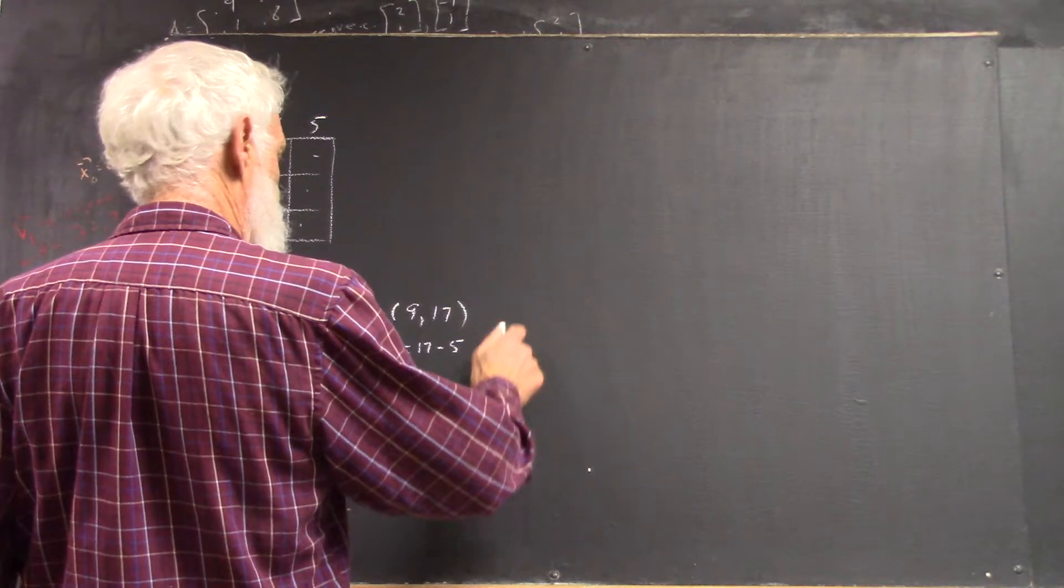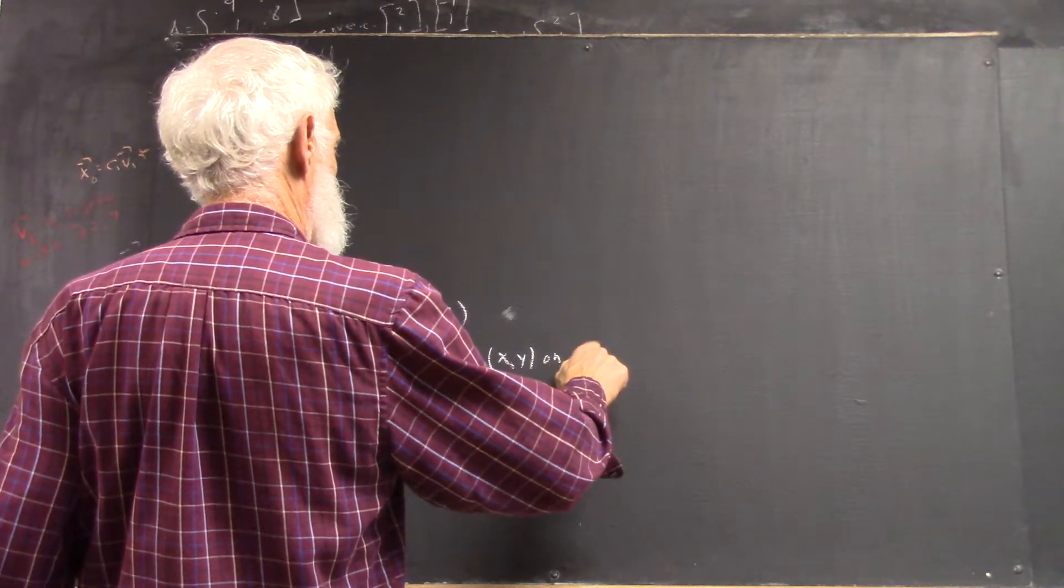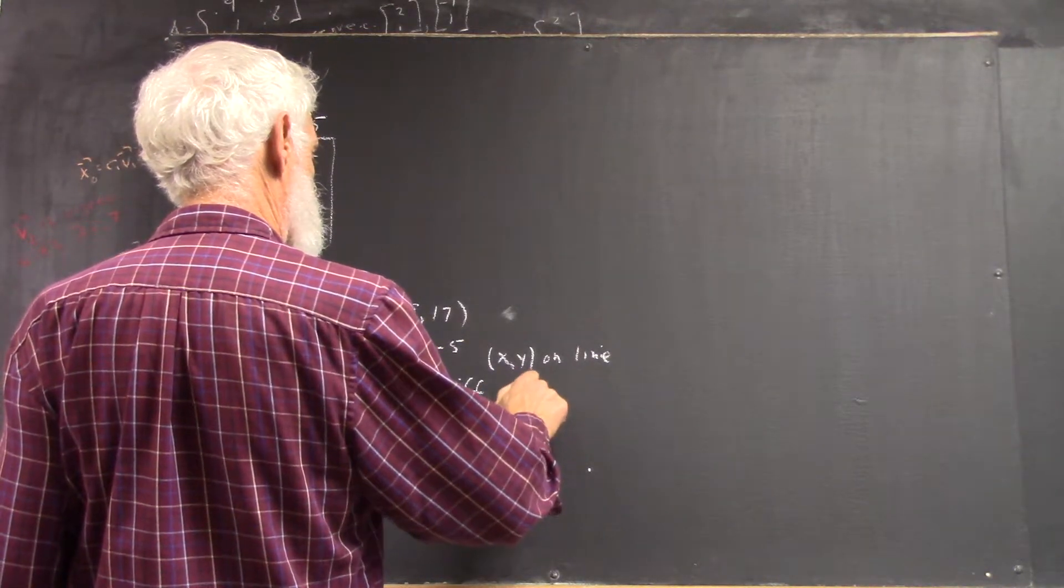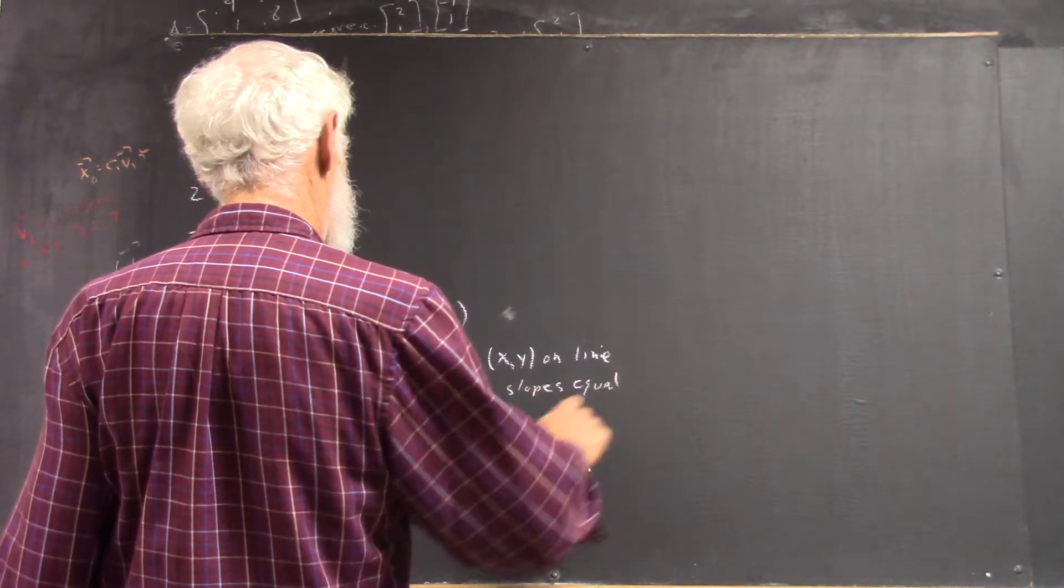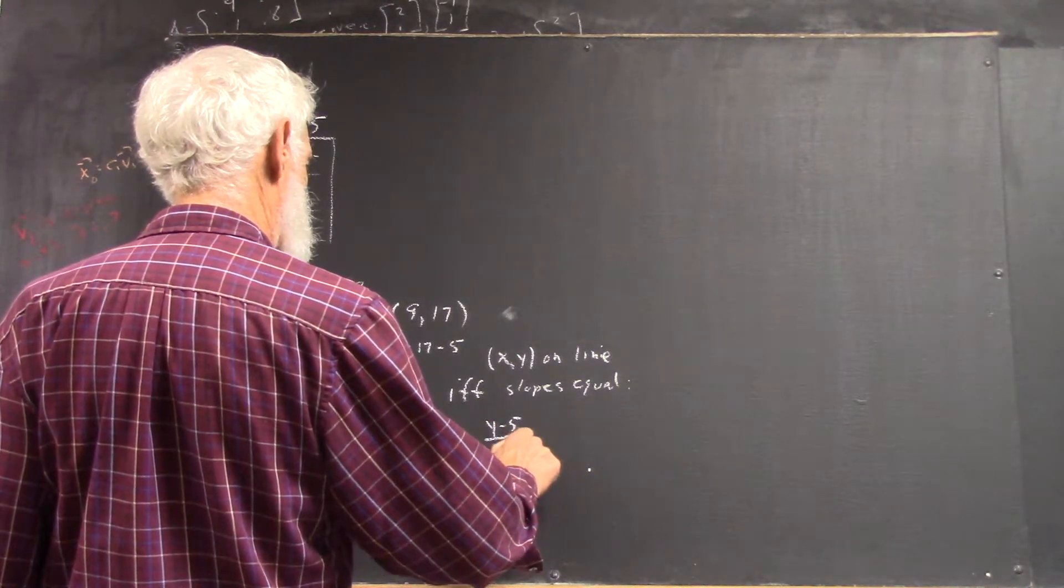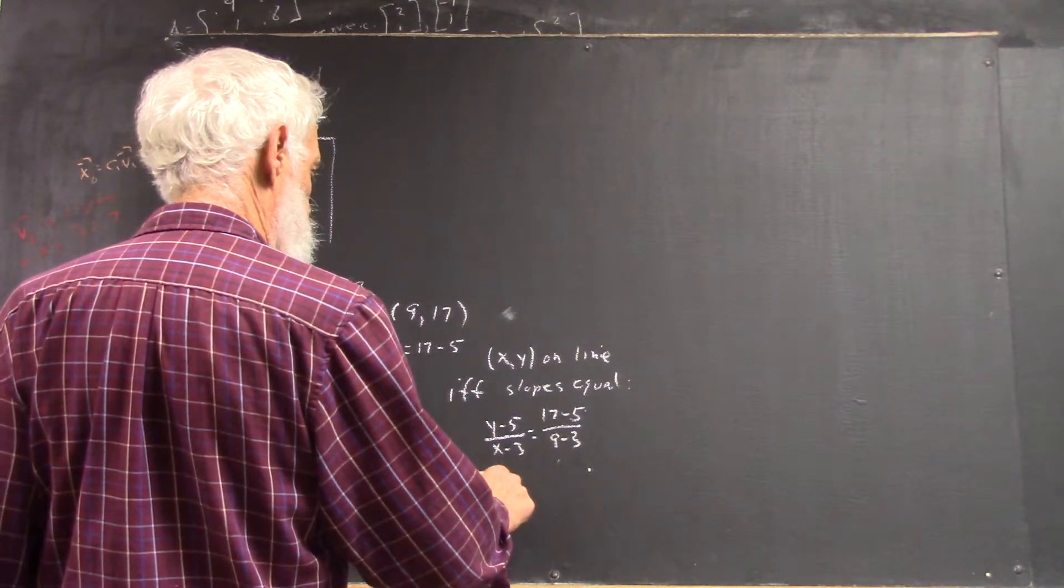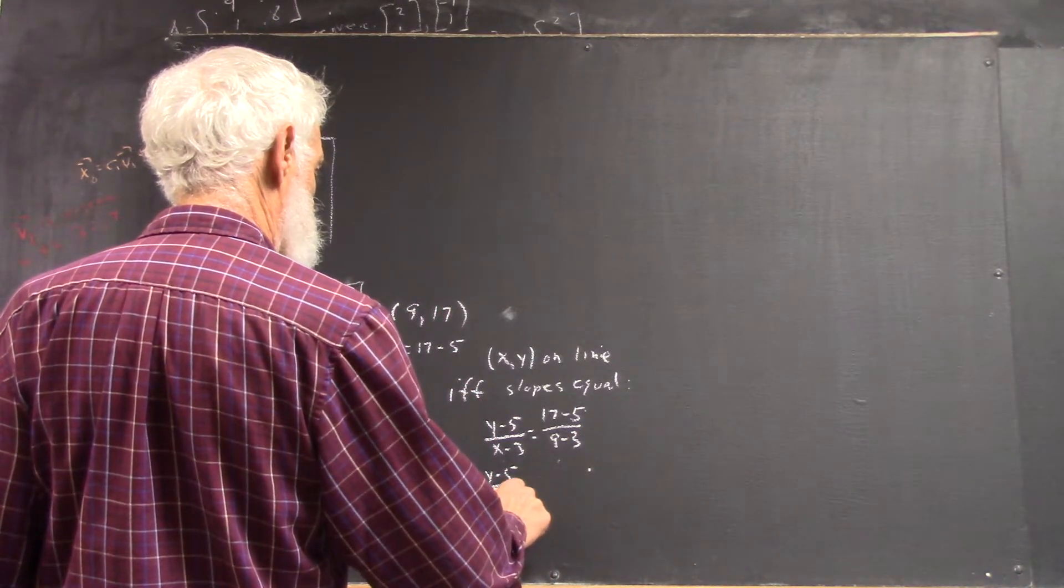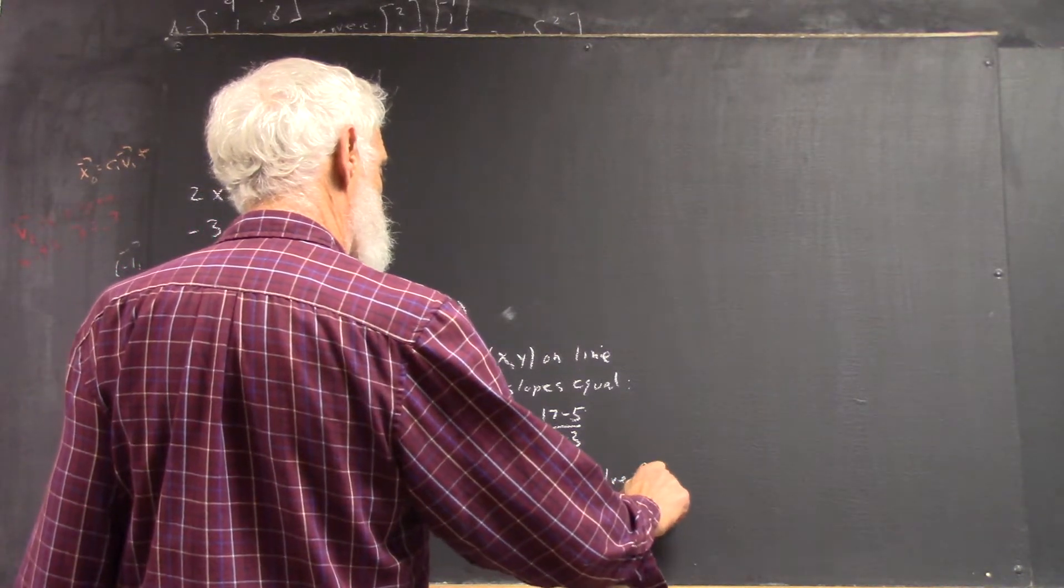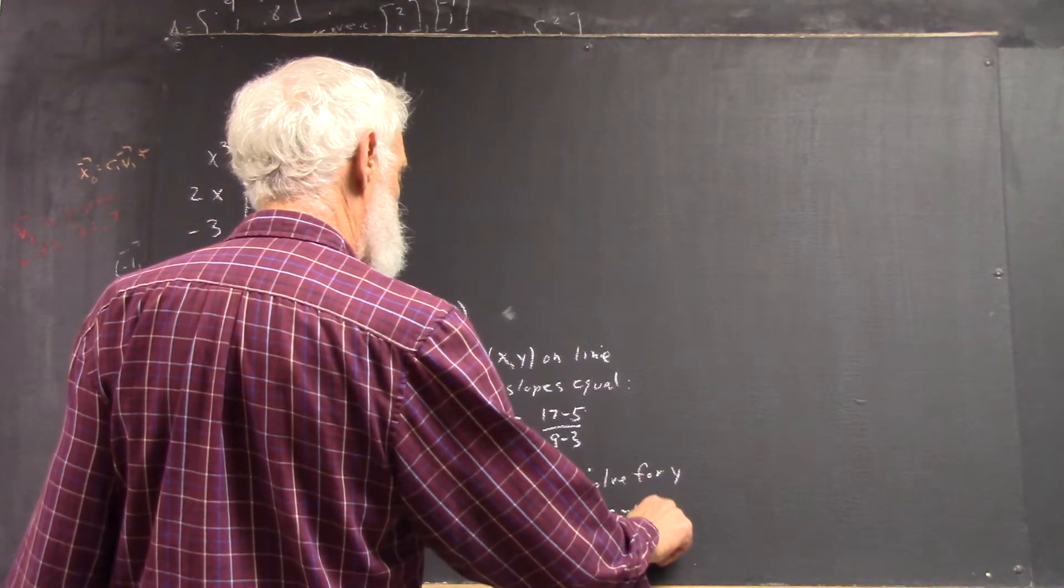Anyhow, don't want to go too far beyond. So, we get IFF stands for if and only if the slopes are equal, meaning that y minus 5 over x minus 3 equals 17 minus 5 over 9 minus 3. Of course, that reduces to 2, and I didn't really have to write all that once I've reduced it over here, but I wanted to reemphasize it. So, you get this equals to solve for y to get the slope-intercept form.